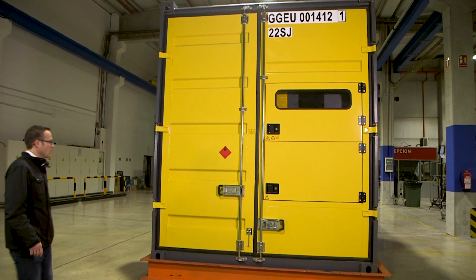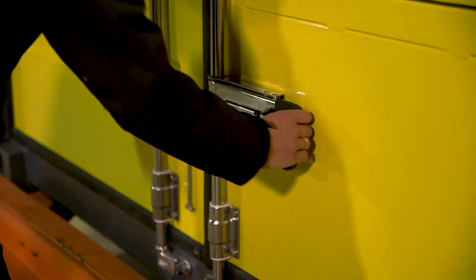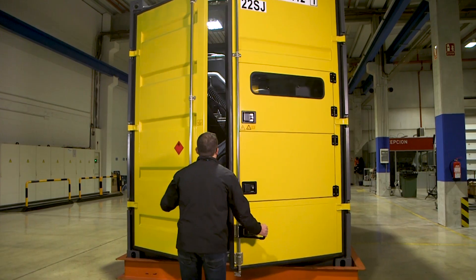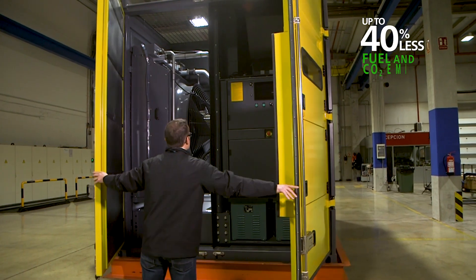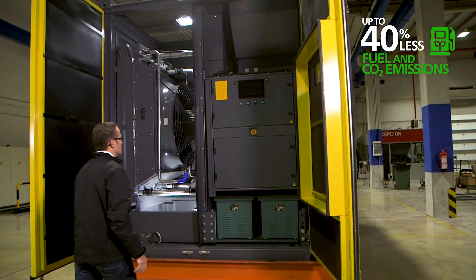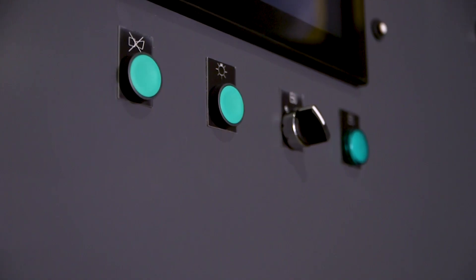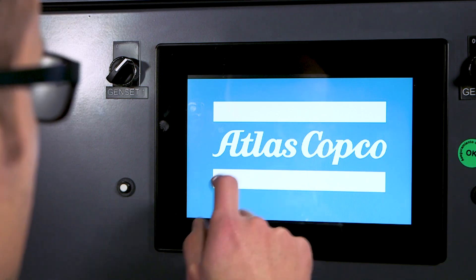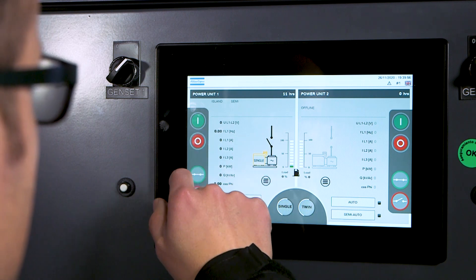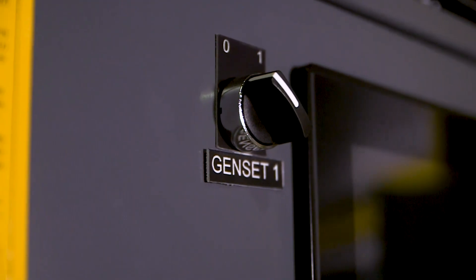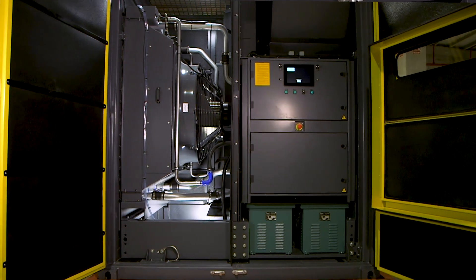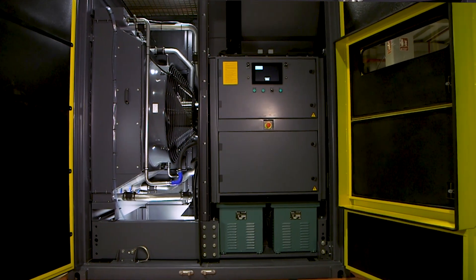Talking about fuel savings, the QAC1350 TwinPower can bring up to 40% fuel consumption reduction on variable load versus single engine solutions thanks to the decentralized control panel with an integrated power management system that switches on and off the two power packs according to the load required.